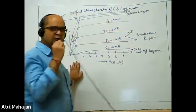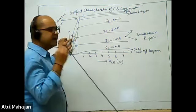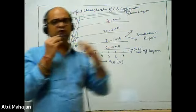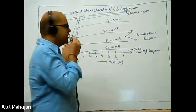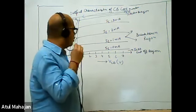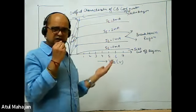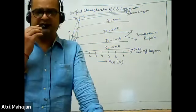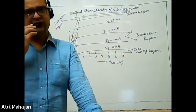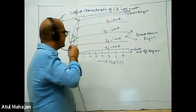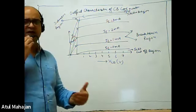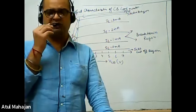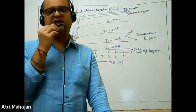In case of output characteristics, the output is always drawn between the output current IC and VCB, the output voltage. VCB is the voltage across the collector-base junction, and IC is the output current, that is the collector current. What is made constant here is the emitter current IE, which is the input current, kept constant in case of common base configuration output characteristics.